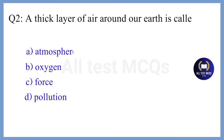Question 2. A thick layer of air around our earth is called — the correct answer is Option A. Atmosphere.